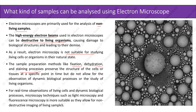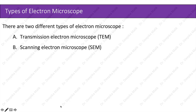Types of electron microscope: there are two major types of electron microscope — transmission electron microscope (TEM) or scanning electron microscope (SEM).